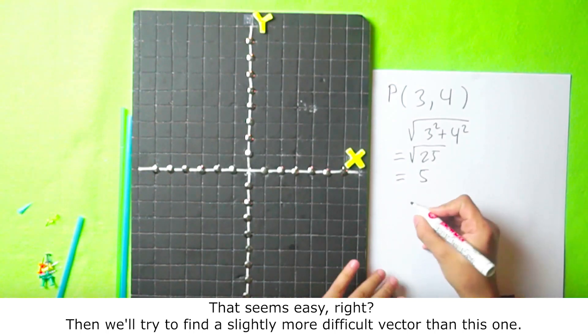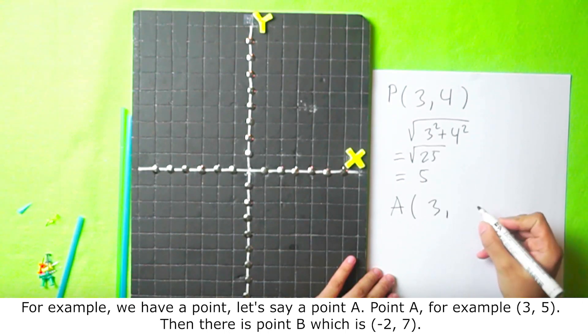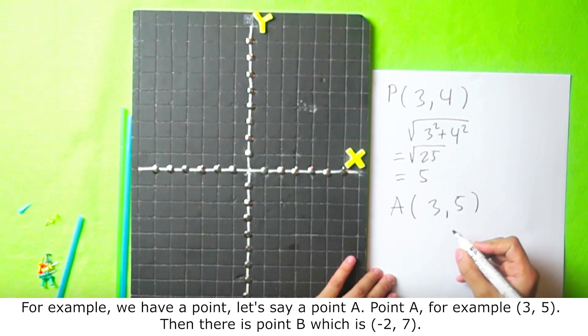For example, we have a point. Let's say point A. Point A, for example, 3, 5. Then there is point B, which is negative 2, 7.